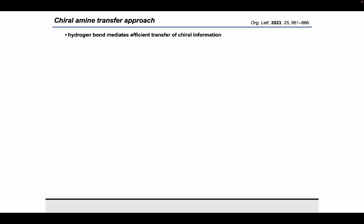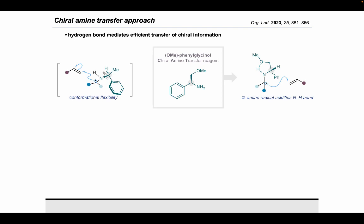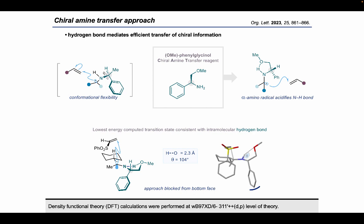By considering the high degree of conformational flexibility in the expected transition state, it becomes clear why the induction is so low. So we considered how to rigidify the chiral center in order to allow for a more efficient transfer of stereochemical information. It has been shown that the N-H proton of an alpha amino radical is more acidic than that of the corresponding amine, so we wondered whether we could take advantage of this increased acidity to form a hydrogen bond and limit the rotation of the chiral amine. The phenylglycinol scaffold was identified as a promising starting point for our chiral amine transfer agent due to the presence of the Lewis-basic oxygen, which should be capable of acting as an intramolecular hydrogen bond acceptor and lock the conformation. DFT calculations performed on a model system were also consistent with the presence of an intramolecular hydrogen bond in the lowest energy transition state identified for the enantio-determining step.